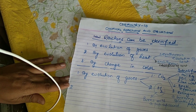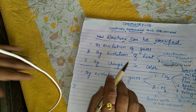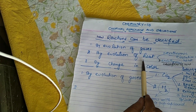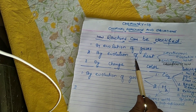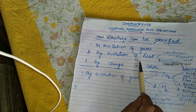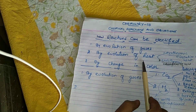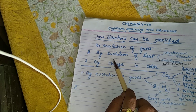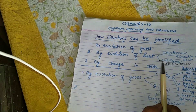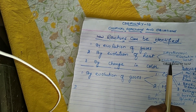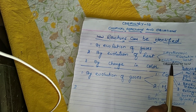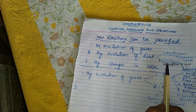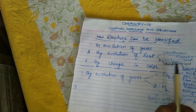A chemical reaction can be identified by three ways. First, by the evolution of gases — you can see different gases are evolved, and there are tests to identify or detect the type of gases evolved. The second way is by the evolution of heat. A reaction can be an exothermic reaction or an endothermic reaction.